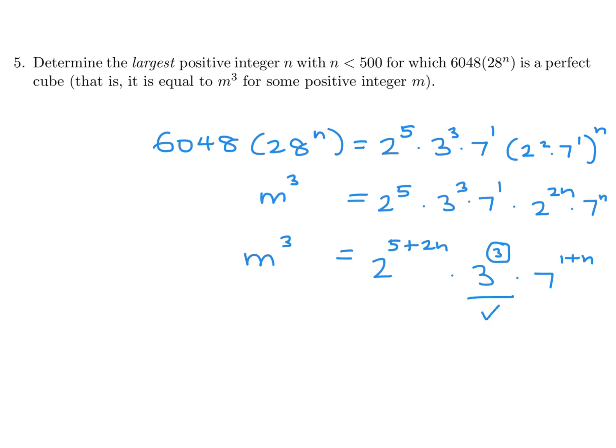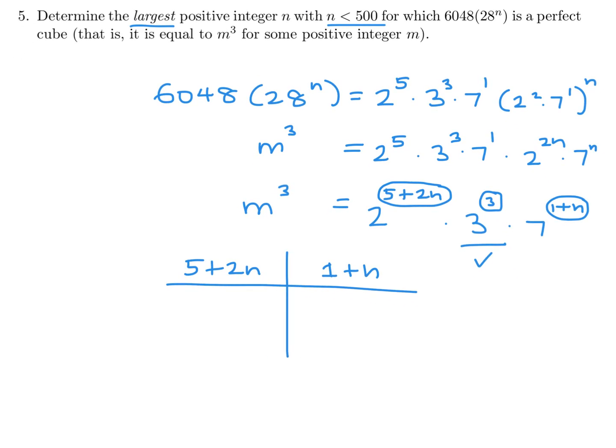Now we have to be concerned with this guy and this guy—we want those to be multiples of 3. So 5 plus 2n and 1 plus n, both of those have to be multiples of 3, and we want the largest possible integer with n less than 500. So what I'm going to do is start counting backwards from 500, so 499, 498, 497, 496.